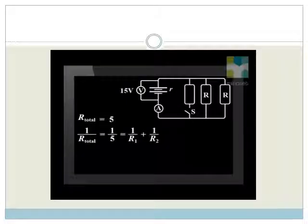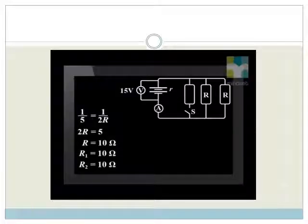So 1 over 5 equals 1 over R1 plus 1 over R2. Since the resistors are identical, we can add R1 and R2.